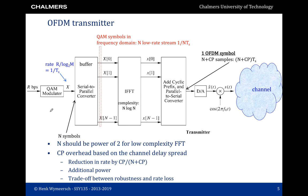An OFDM transmitter operates as follows. We take QAM symbols, which we convert from frequency to time domain — the QAM symbols reside in the frequency domain — we have time domain samples, we add a cyclic prefix, and send over our channel. The duration of one OFDM symbol is the number of sub-carriers N plus the cyclic prefix times the symbol duration. The cyclic prefix leads to a certain overhead which we try to minimize, by having relatively long OFDM symbols with respect to the cyclic prefix duration.